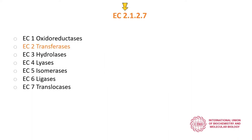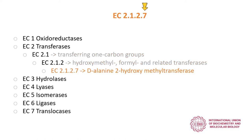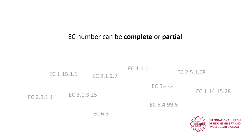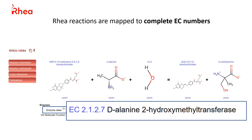Those numbers represent a progressively finer classification of the enzymatic activity. An EC number where all four positions are defined is commonly called a complete EC number. In partial EC numbers, the last number is replaced by a dash. RIA reactions are mapped to complete EC numbers.